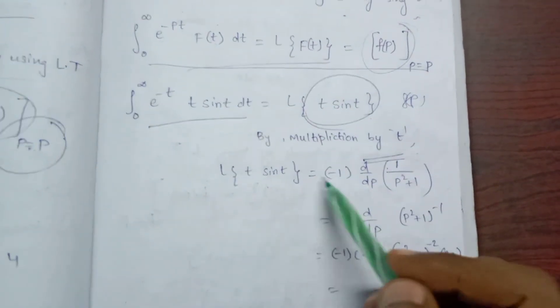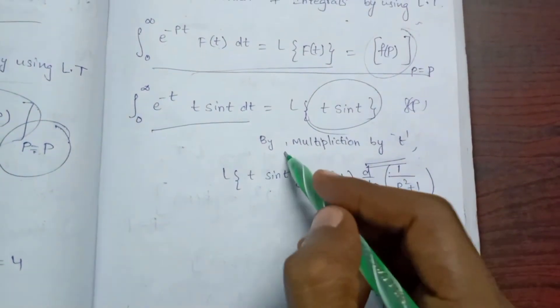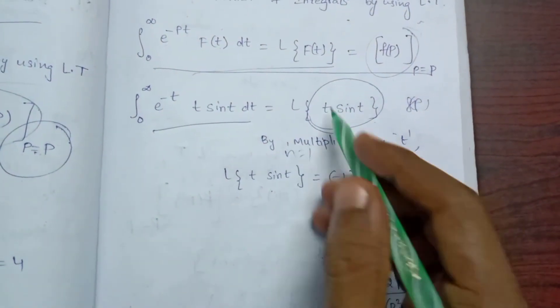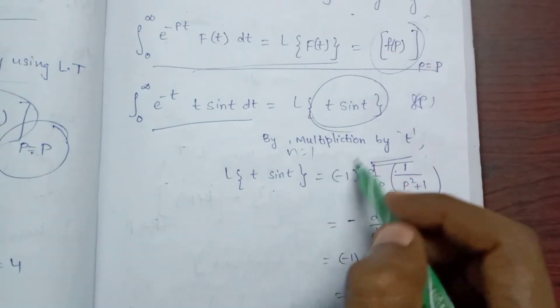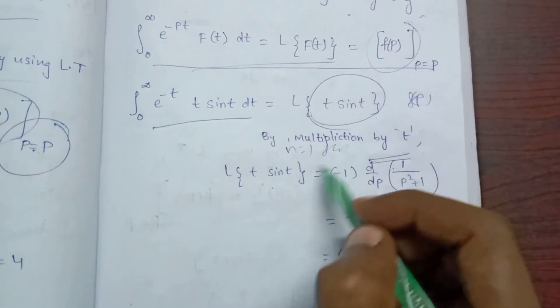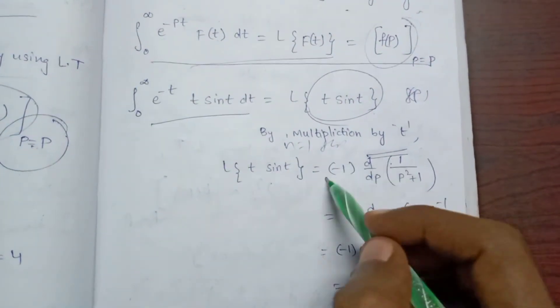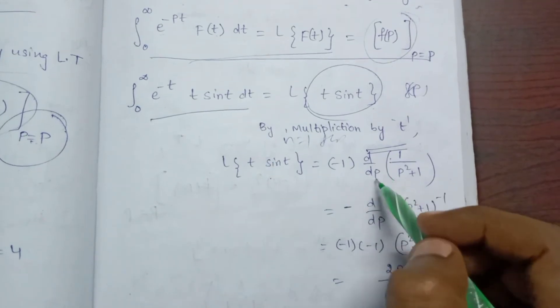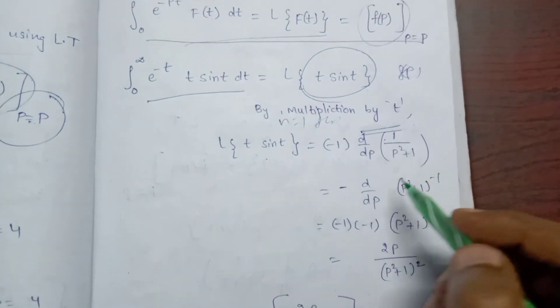L{t sin(t)} is equal to: the formula gives us minus d/dp of L{sin(t)}, which equals minus d/dp of 1 over (p² + 1).